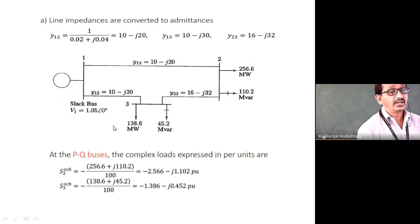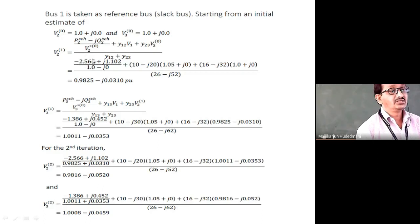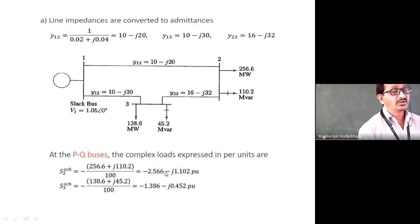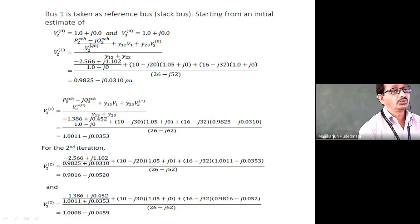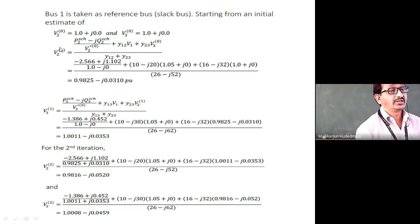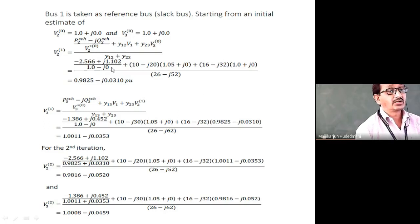Similarly at bus 3, we compute PG − PD and QG − QD. The term −jQ changes sign because of the original P − jQ expression. The flat start initial estimate uses V = 1∠0 or 1 + j0 for all unknown voltages. Substituting all values and dividing by Y22 gives V2(1); similarly V3(1) is obtained.